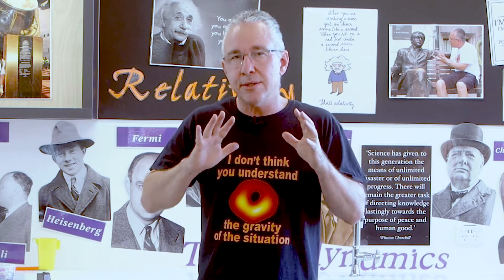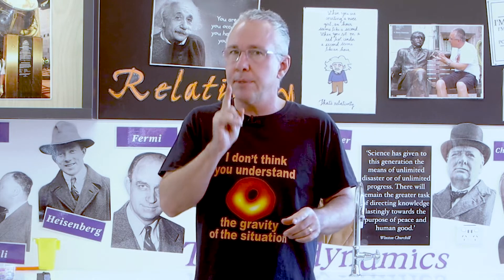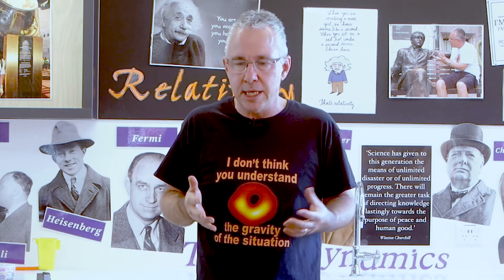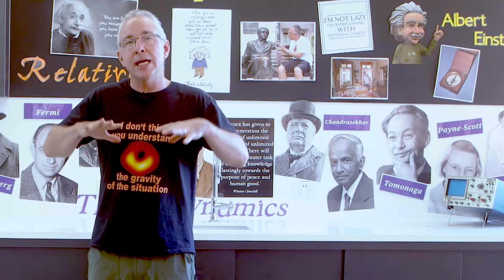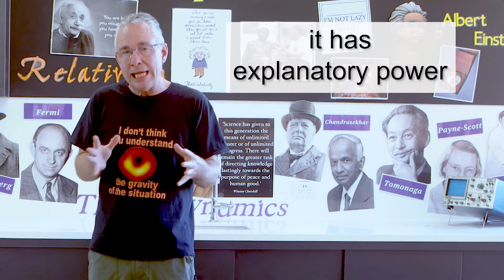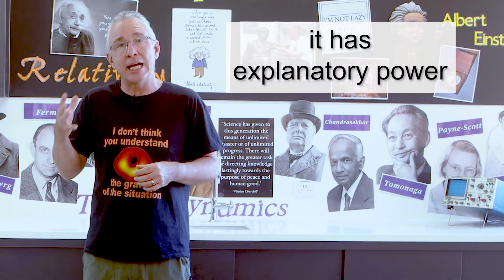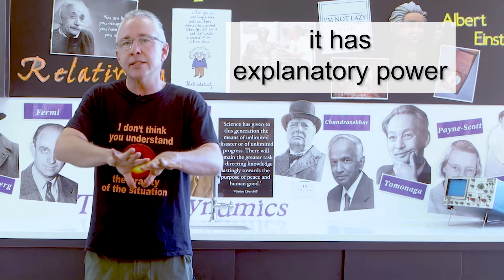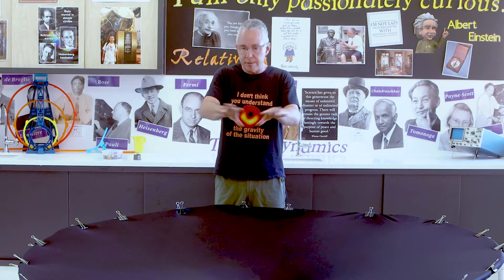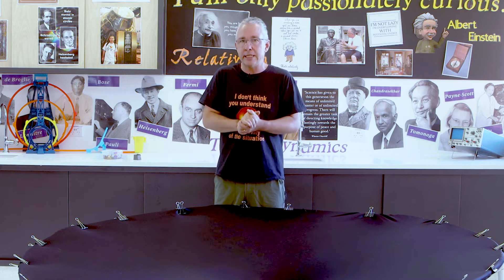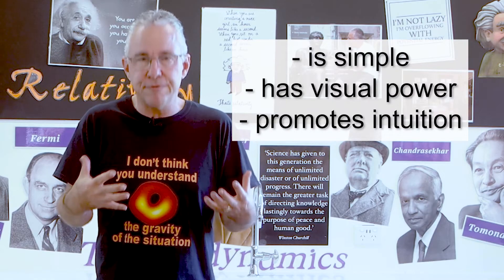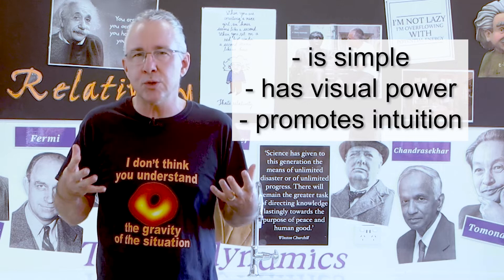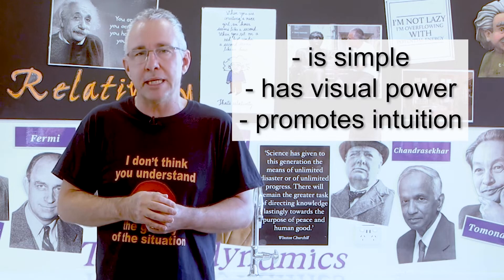There are of course important limitations to this model, and it's really important to appreciate both strengths and limitations. A strength of a model is when it satisfies key concepts and explains something that may be quite abstract. In this case, the distortion of space-time can be modeled by the distortion of our latex sheet. Another strength: it's simple, it has visual power, and it gives you an intuition of space-time.